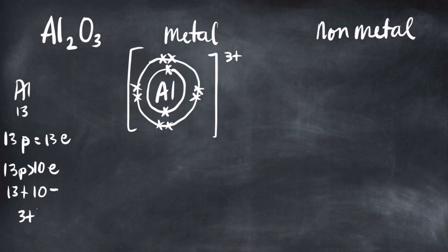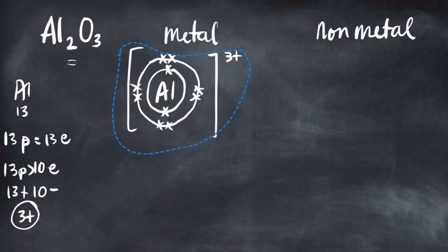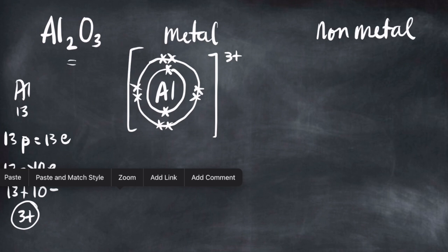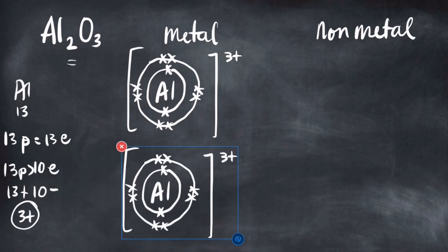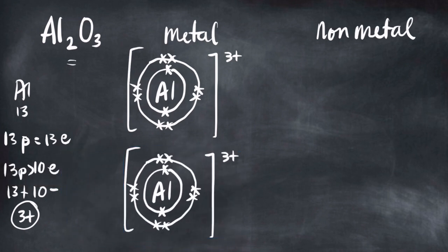So you end up with a charge of 3+. Since we need two aluminum atoms in the formula, you need to draw another one. I'll copy and paste it — and that's how it should look: two aluminum atoms stacked on top of each other.